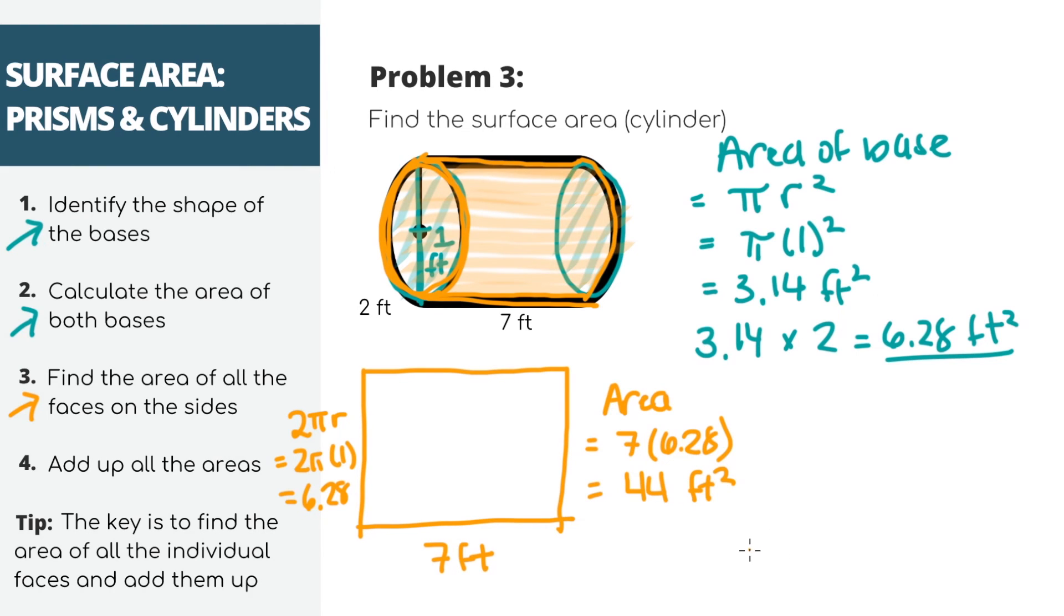For our final step, we can add up the areas 6.28 plus 44, and get 50.3 feet squared. That's it.